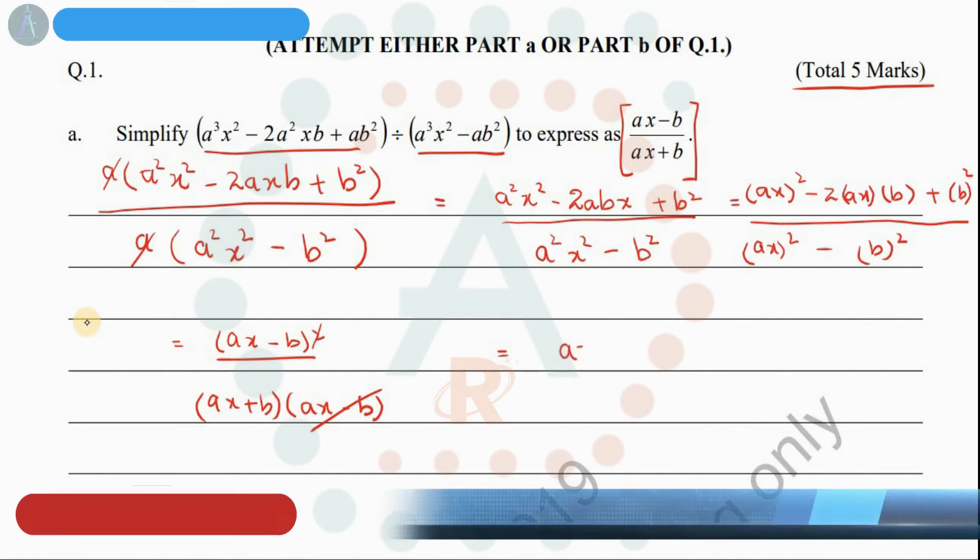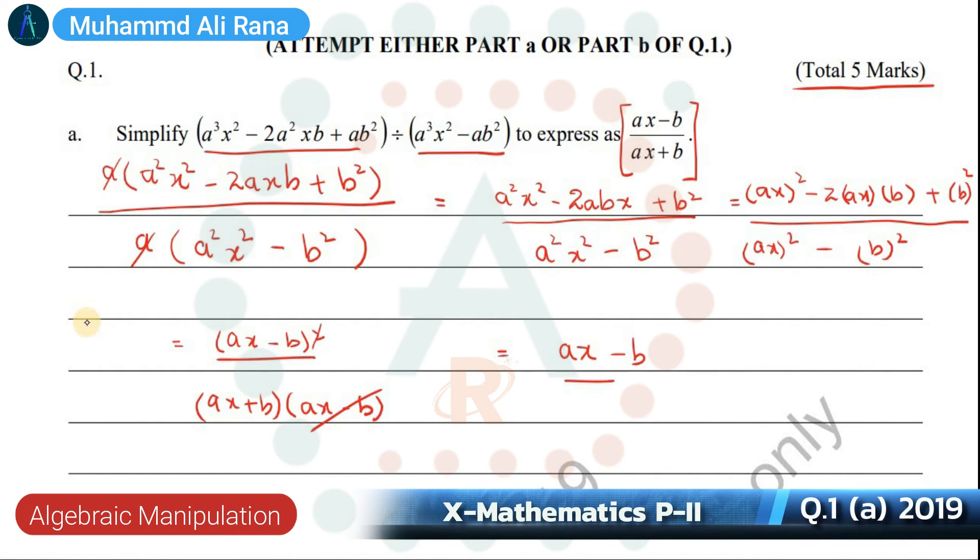So our remaining part is (AX - B) divided by (AX + B). This is our answer for five marks.